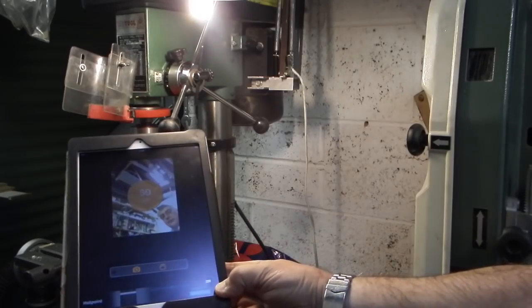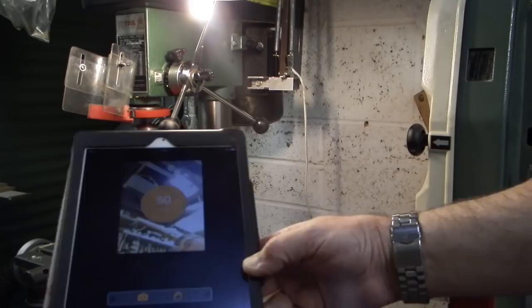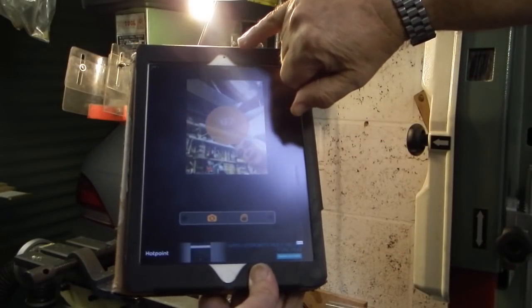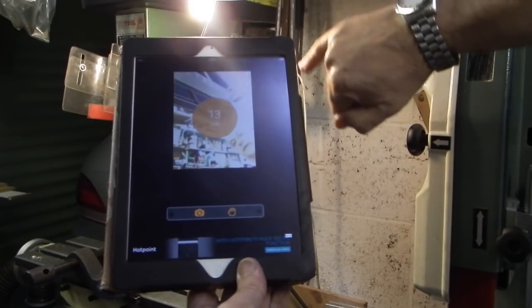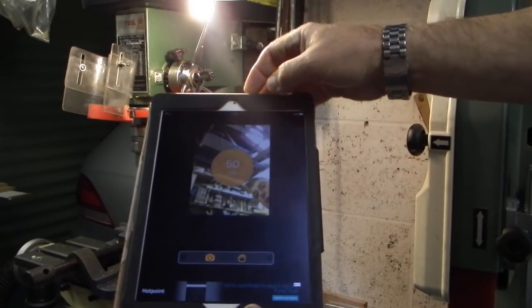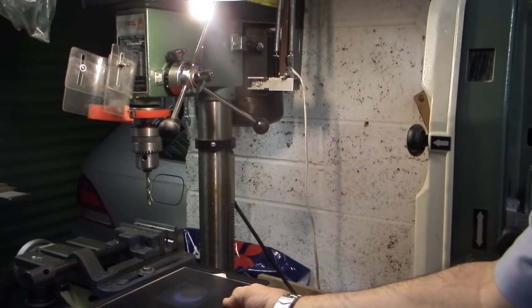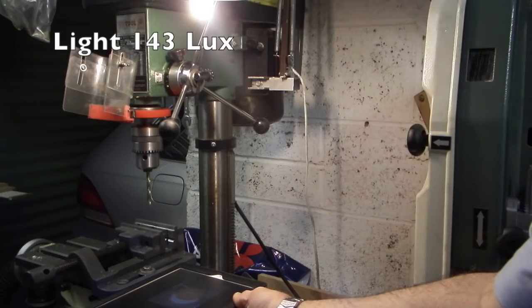On this iPad I've downloaded an app which gives me the light reading in lux. On this app it uses the camera to give you the lux reading, so you've got to make sure that the camera lens is under the lamp that you're checking. So if I put the iPad on the drilling machine it's giving me a reading of 143.